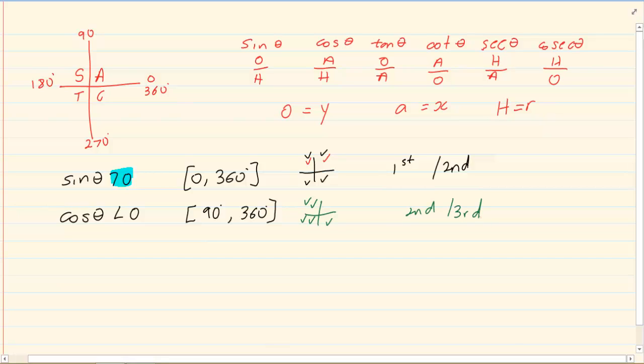Now, you must understand. When I say cos theta is less than 0, I am saying where is it negative?